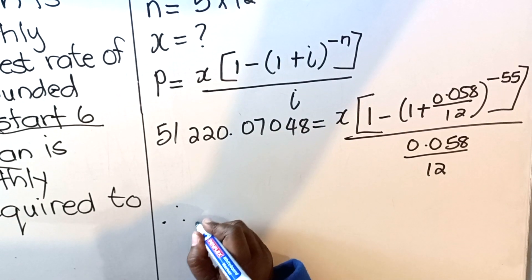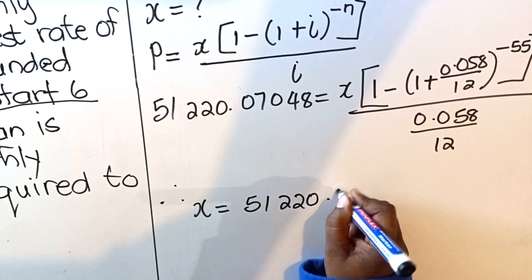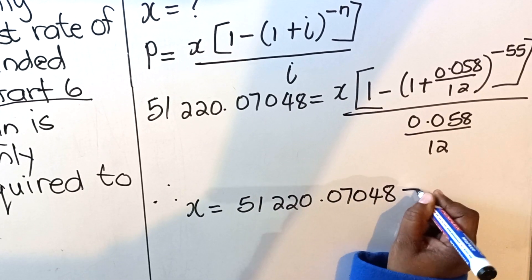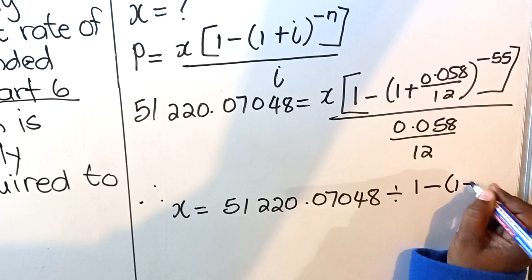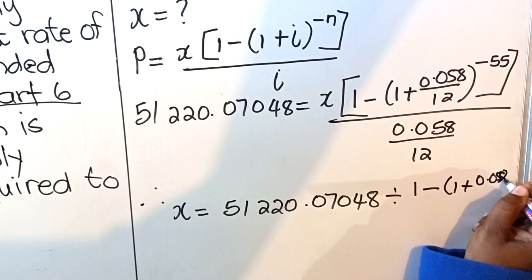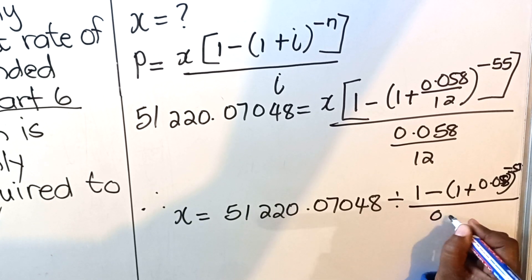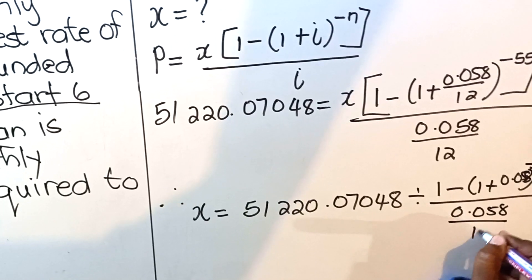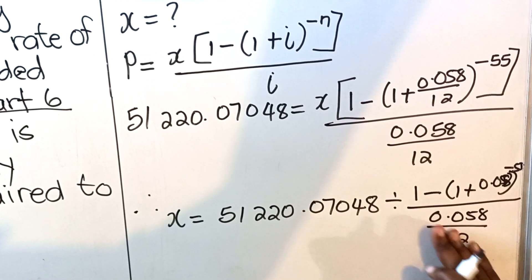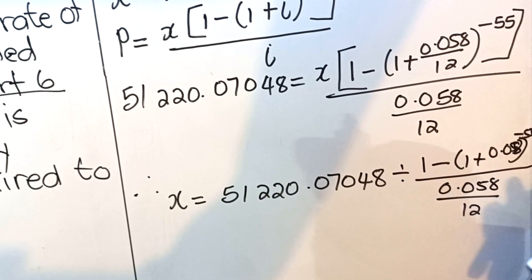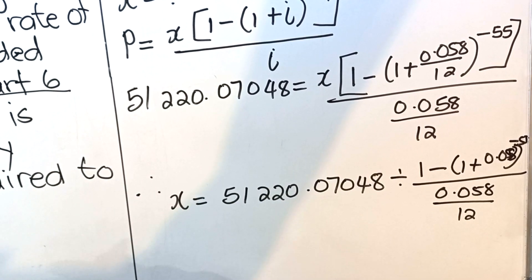So x = 51,220.07048 ÷ {[1 − (1 + 0.058/12)^(−55)] / (0.058/12)}. Punch the entire denominator into your natural display calculator, keep as many decimals as possible, then divide your P by that number to get x.